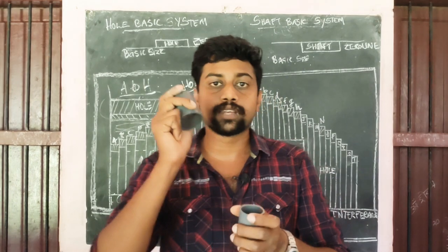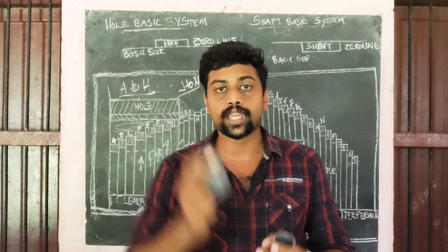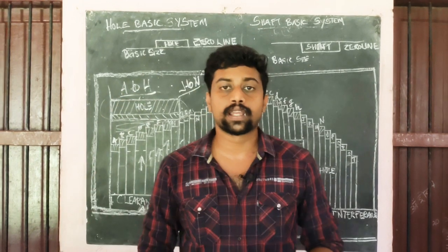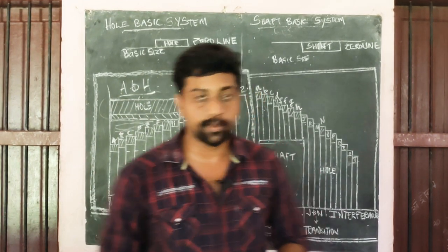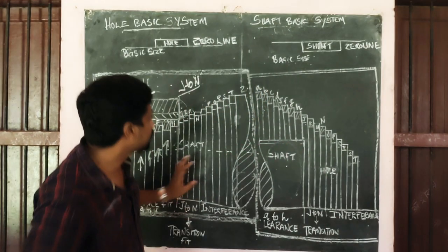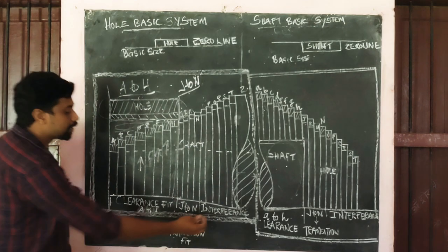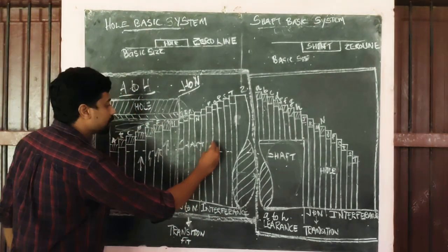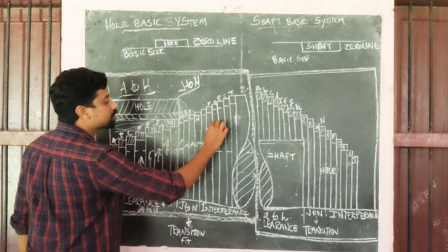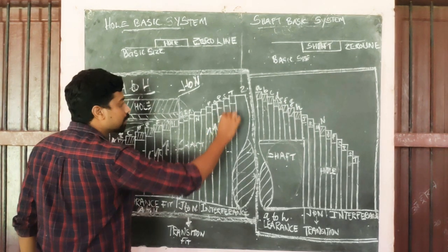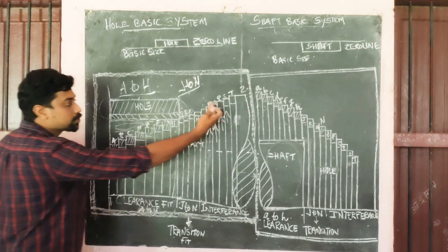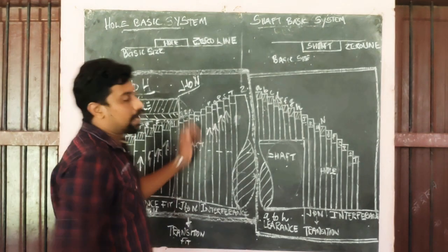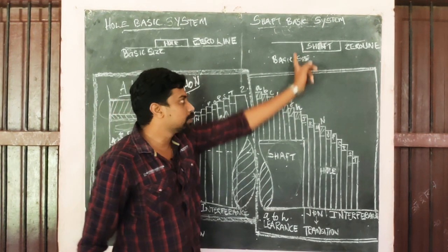The negative value applies here. The clearance is the positive value and the interference is the negative value. What we are doing here is the negative value of this shaft. This is the hole basis of this shaft. In the hole basis, the same will be in the same part, so it will be opposite to the shaft basis.